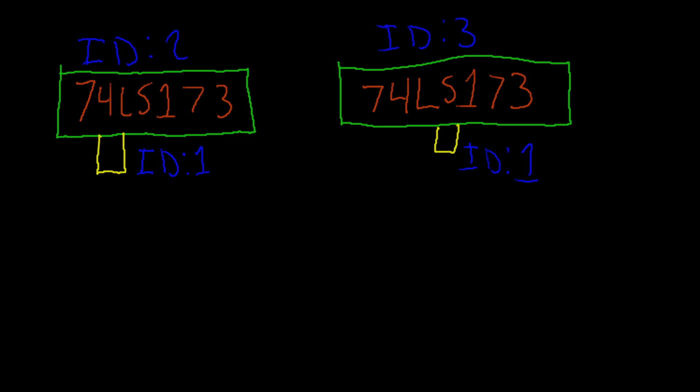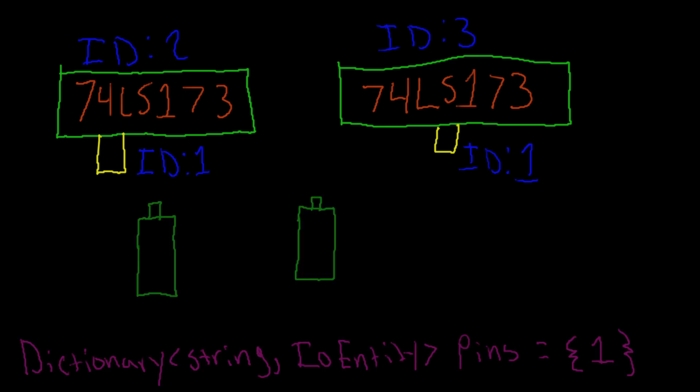The first change was how we identify pins. Before, we would store them in a dictionary with a string for a key and an IO entity as a value. This is how we would reference and find IO entities for certain pins on ID. We would have multiple instances of the same chip, and the subchip ID would have a unique identifier, but all the pins would have the same IDs between them.